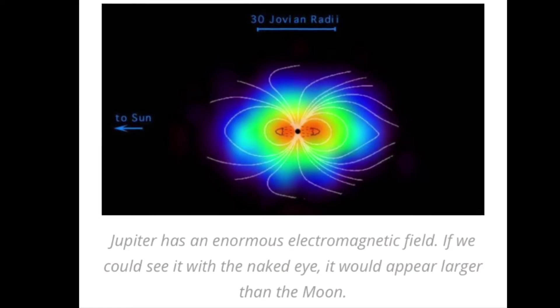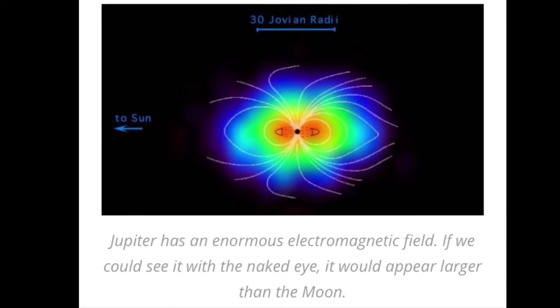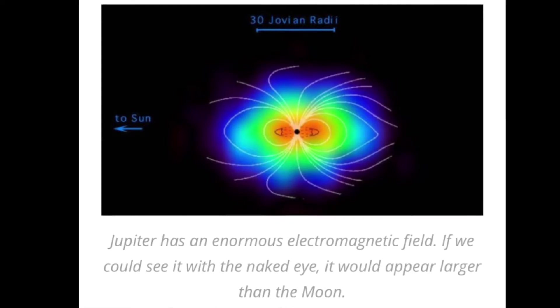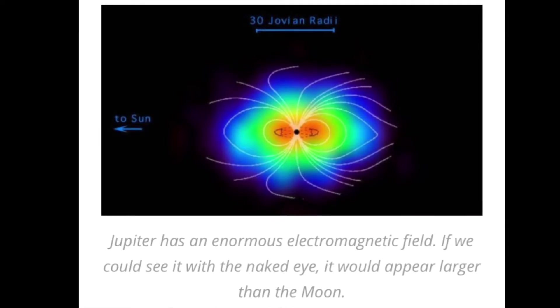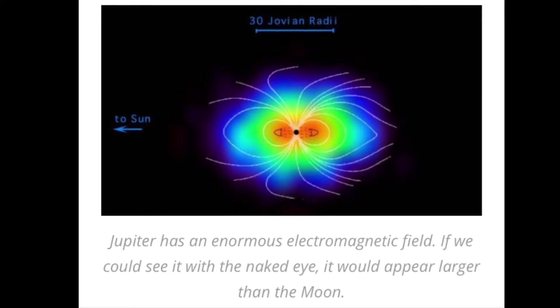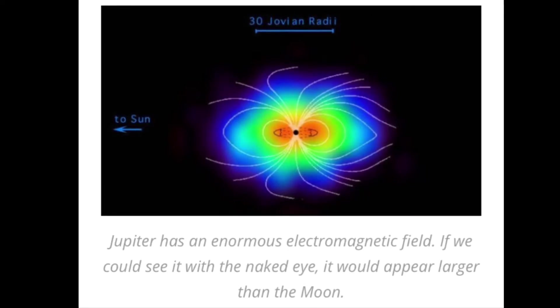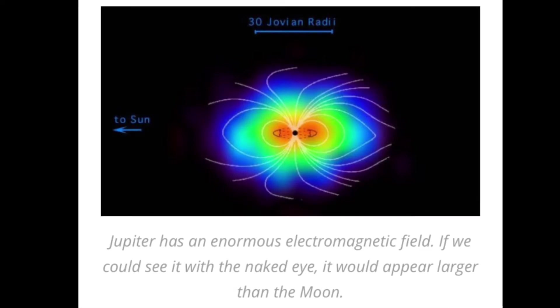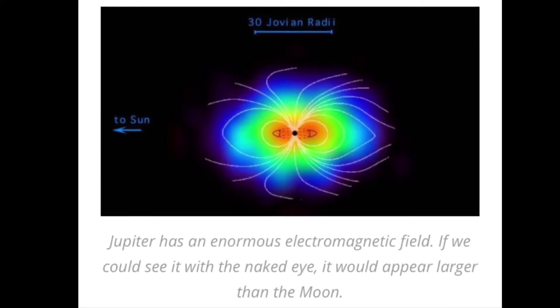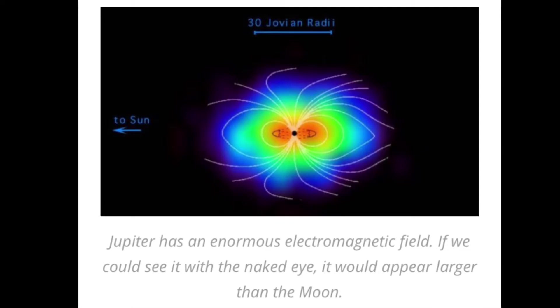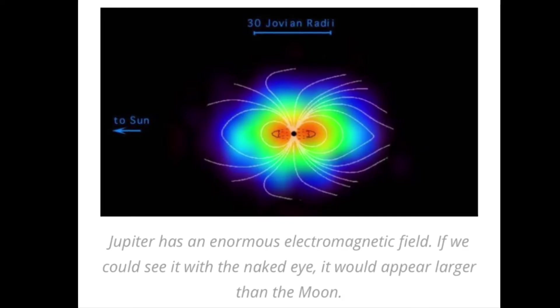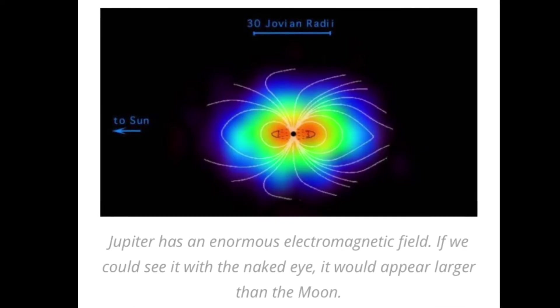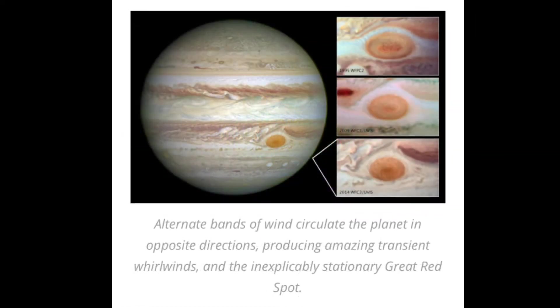Electric winds occur when an electric field potential exists that motivates ionic species in the air to move. Positive ionic species are drawn in one direction and negative ions and free electrons are drawn in the opposite direction, as dictated by the polarity of the electric field.